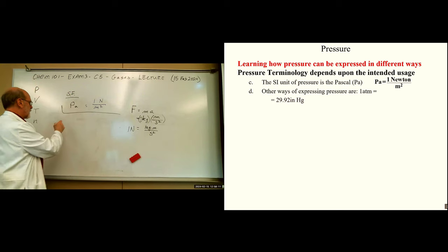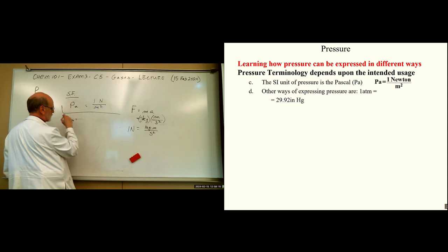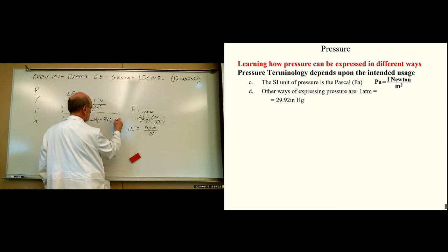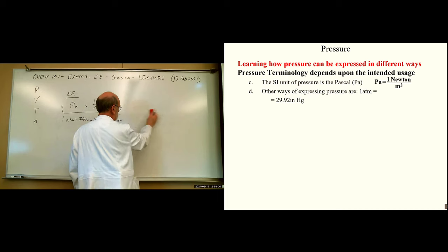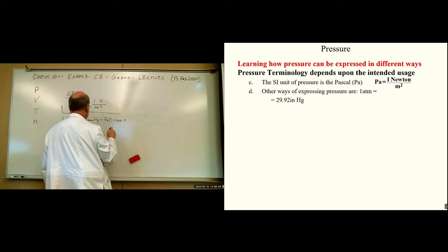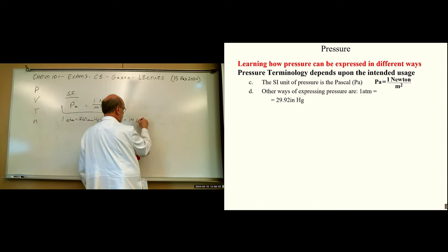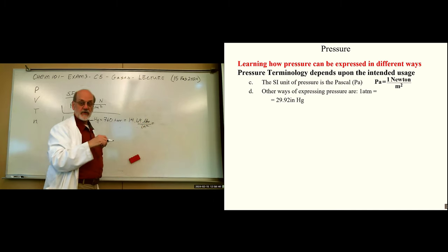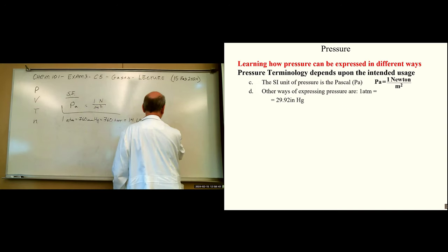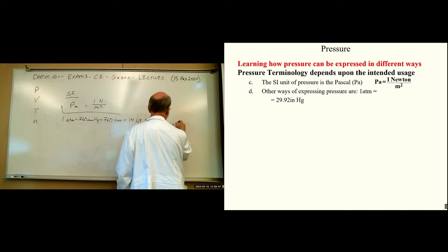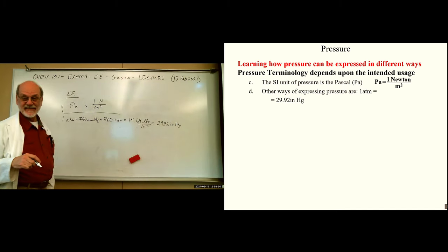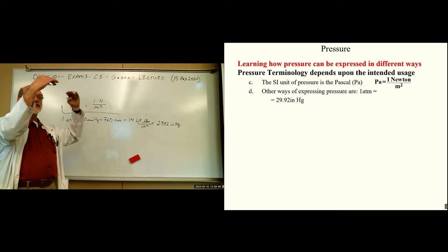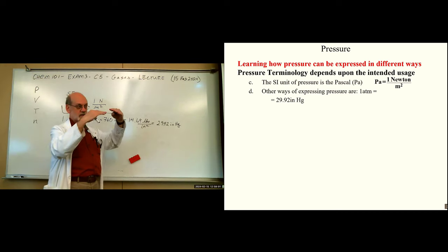One atmosphere equals 760 millimeters of mercury, which equals 760 Torr, which also equals 14.69 pounds per square inch. That's also equal to 29.92 inches of mercury. So on a barometer, if you have 760 millimeters marked on one side, on the other side you'd have 29.92 inches — equivalent to 760.